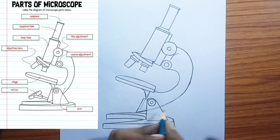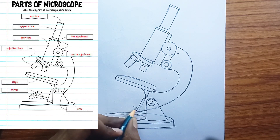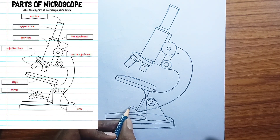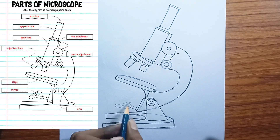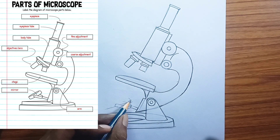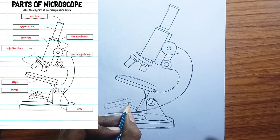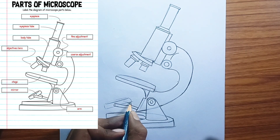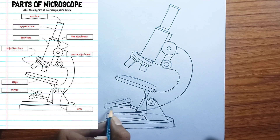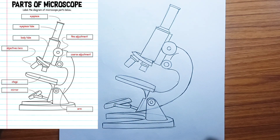Eyepiece tube. Objective lenses — these are the magnifying lenses located on the revolving nosepiece just above the stage. Microscopes typically have several objective lenses of different magnifications, e.g., 4x, 10x, 40x, 100x, which can be rotated into position to change the total magnification. They are responsible for the primary magnification.